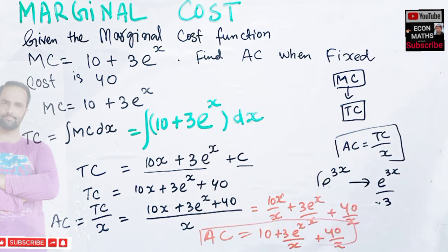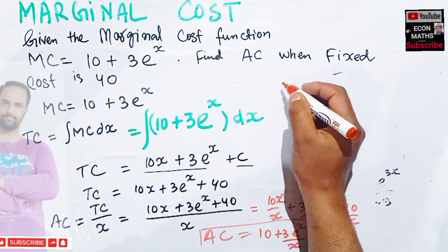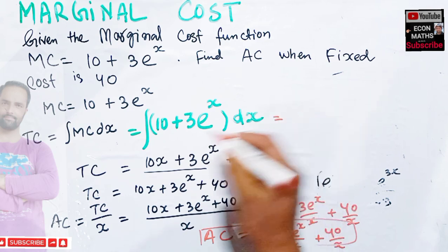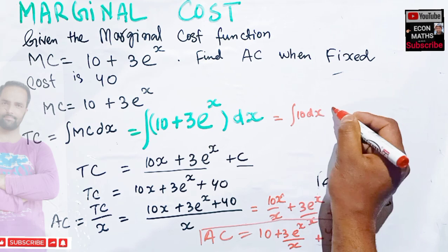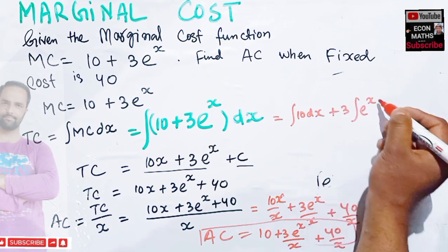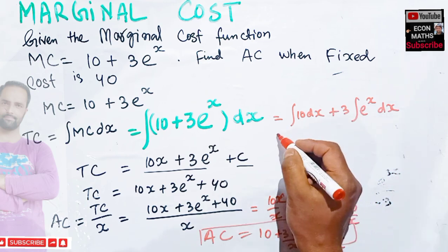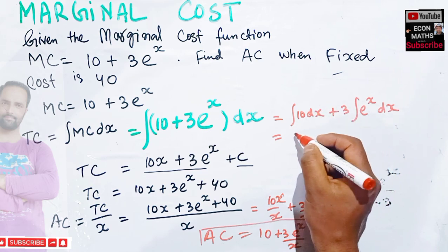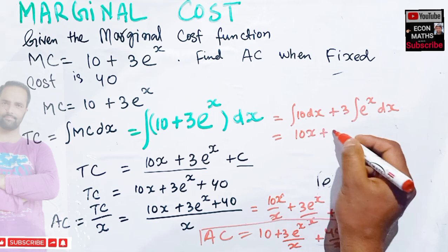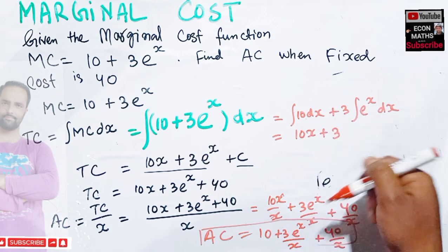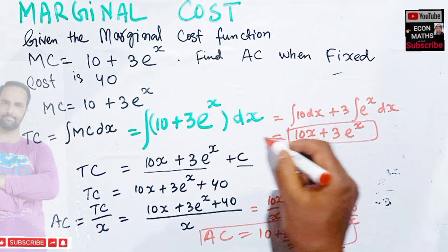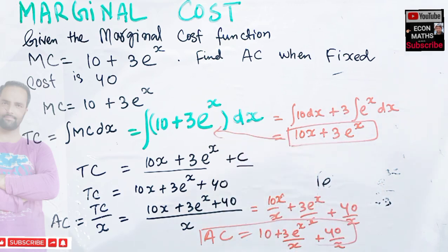Let me repeat how we took the integral. We were given the integral of 10 + 3e^x dx. The integral of 10 dx is 10x, and the integral of e^x is e^x itself. I hope I made myself clear in this video. Thank you.